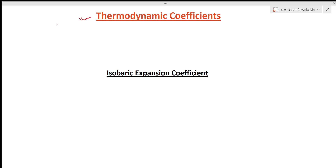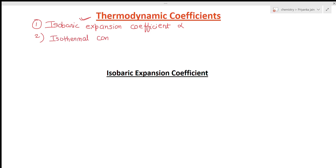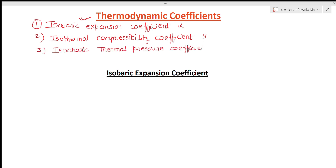In thermodynamics, there are three coefficients. These are called alpha, beta, and gamma. The first is called the isobaric expansion coefficient, that is called alpha. The second is called the isothermal compressibility coefficient, denoted by beta. The third is the isochoric thermal pressure coefficient, denoted by gamma. Today we will study all of these, their relationships, and how we can express them in terms of the equation of states.